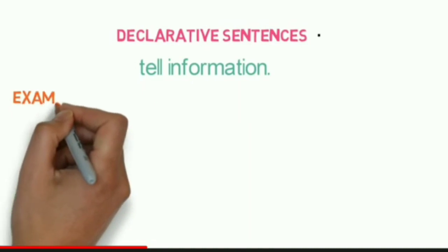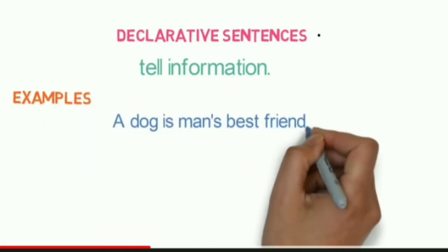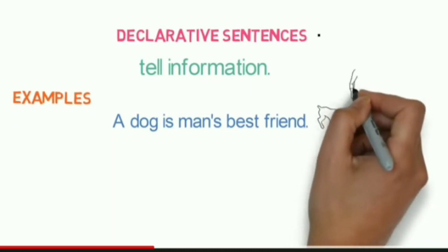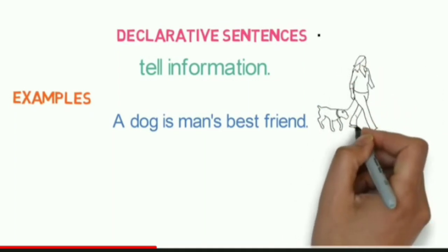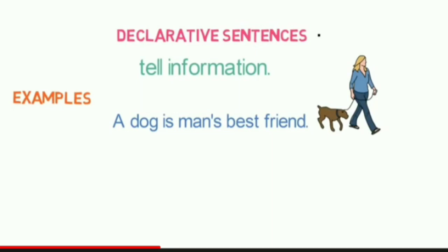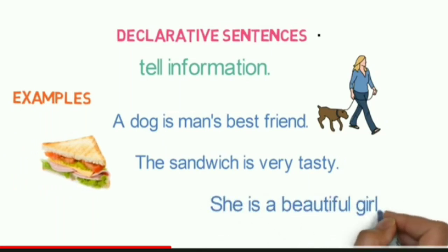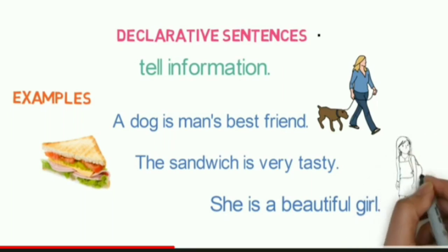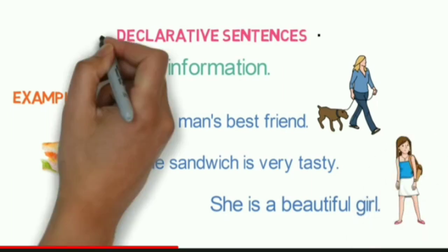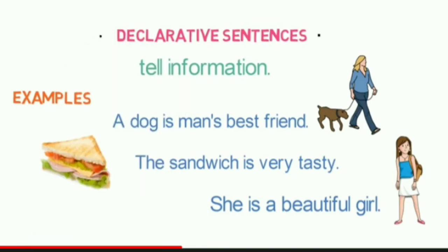Declarative sentences tell information about anything and they end with a period. For example: 'A dog is man's best friend' — here we are telling information that a dog is always a best friend of man. 'The sandwich is very tasty' — informing the taste of the sandwich. 'She is a beautiful girl' — informing the beauty of a girl. All of them end with a period. Declarative sentences just state facts.